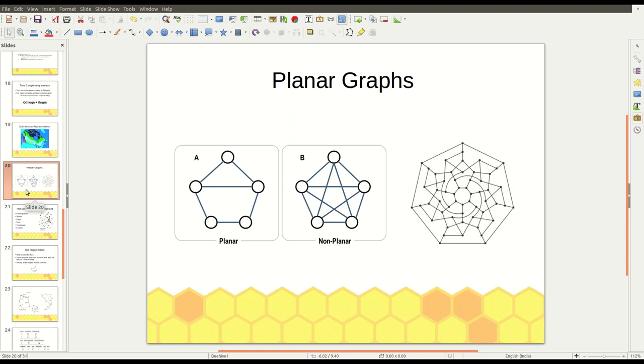As you can see the figure B here, in this graph we have intersecting edges. So we cannot call it as planar, we call it as non-planar. But these two graphs, we can call these two as planar graphs because they don't have any intersecting edges.